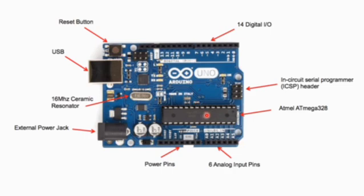Then there are six pins here — the analog input pins. All sensors are connected to these analog input pins. The sensors we saw earlier, the Arduino modules, are connected to these analog input pins. This is where we take input from the sensors, and the microcontroller processes it and gives the output through the digital pins.